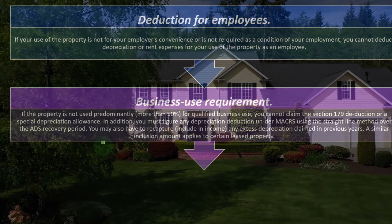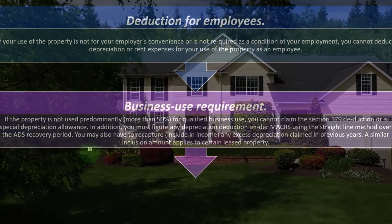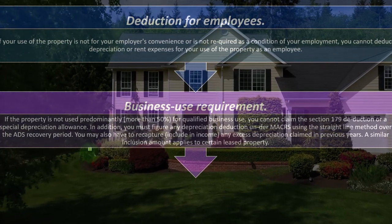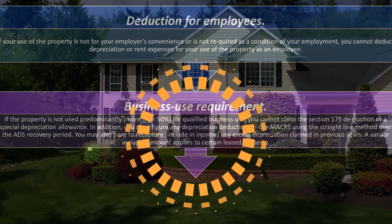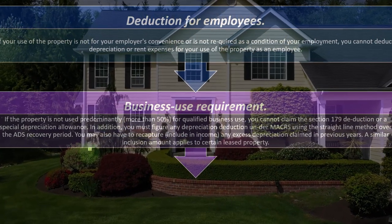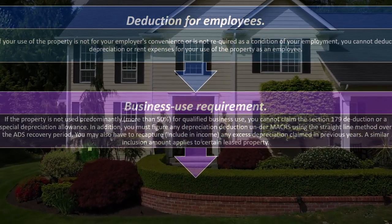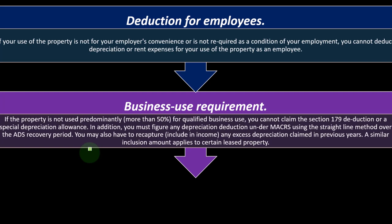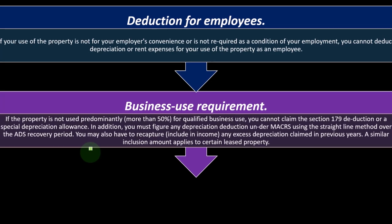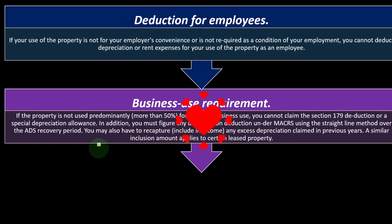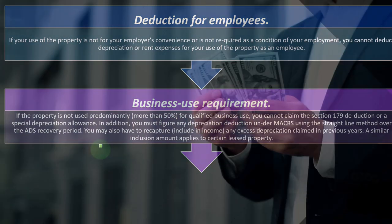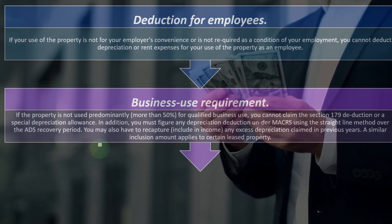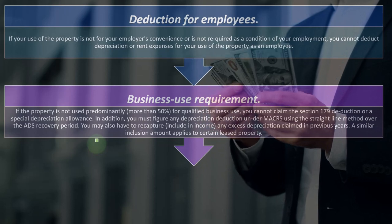If the property is not used predominantly — more than 50% — for qualified business use, you cannot claim the Section 179 deduction or the special depreciation allowance. In addition, you must figure any depreciation deduction under MACRS using the straight-line method over the ADS recovery period. Note that usually this kind of property might use the GDS and the double declining method, but they're restricting that to straight-line ADS recovery. You may also have a recapture — include in income any excess depreciation claimed in previous years. A similar inclusion amount applies to certain leased property.